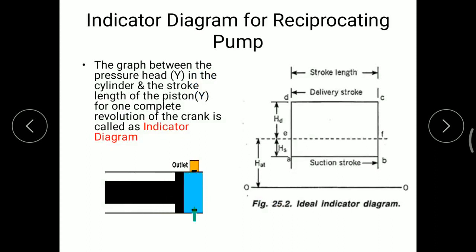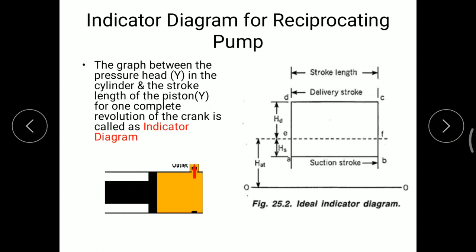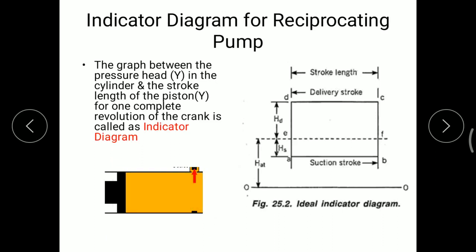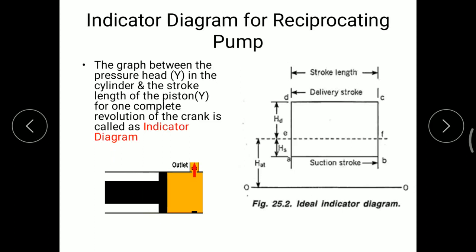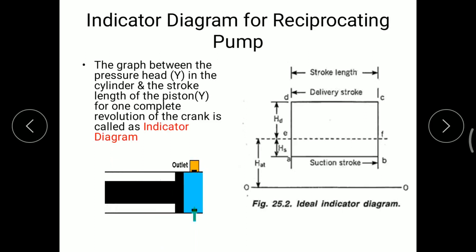Now we will see the indicator diagram for a reciprocating pump. The graph between pressure head in the cylinder and stroke length of the piston for one complete revolution of the crank is called an indicator diagram. When the piston moves from top dead center towards bottom dead center, the crank covers 0° to 180° rotation. When the piston moves from bottom dead center towards top dead center, the crank rotates from 180° back to 0°, completing one full revolution, during which the pressure in the cylinder increases.